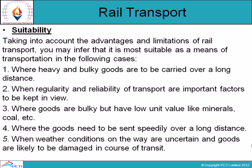After filling the forwarding note, it is submitted to the parcel office, which issues a railway receipt (RR) as acknowledgment of goods received. When goods arrive at the destination, the consignee (receiver) must accept delivery within a specified period; otherwise an extra charge called demurrage is payable for delayed acceptance of delivery.